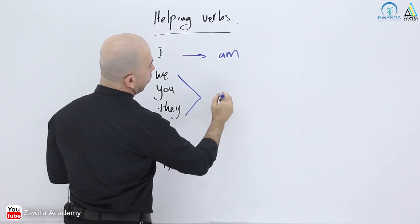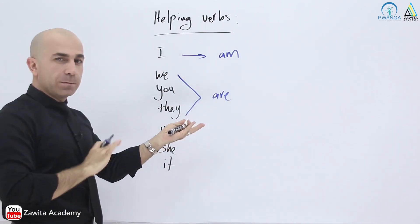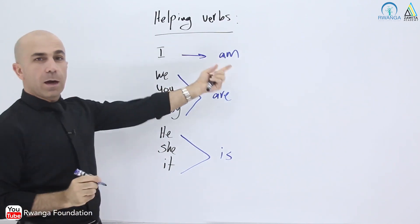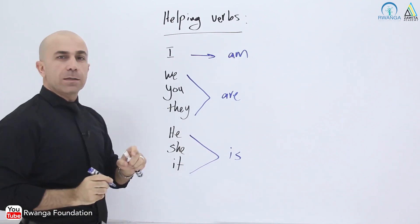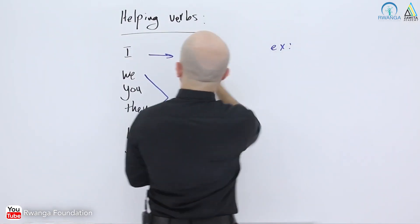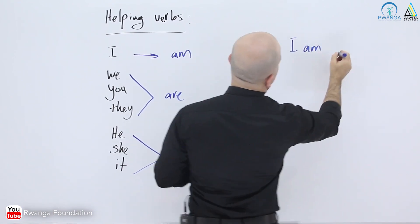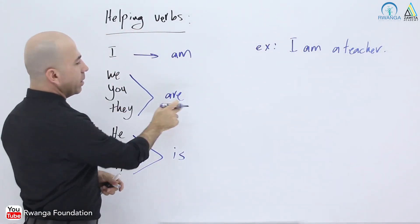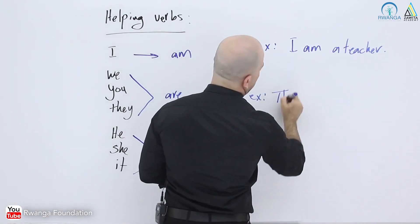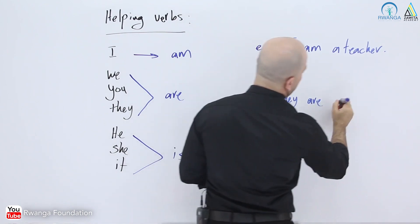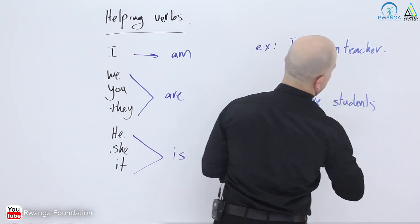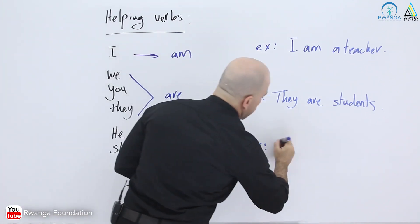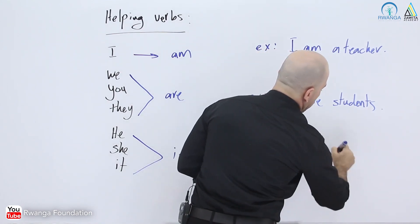For helping verbs: I use 'am,' we/you/they use 'are,' and he/she/it use 'is.' For example: 'I am a teacher.' For we/you/they: 'They are students.' For he/she/it: 'She is a player.'